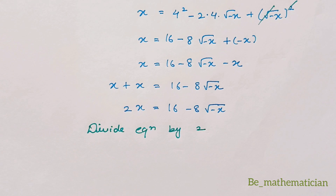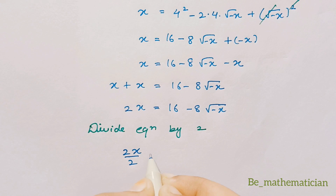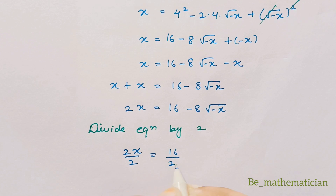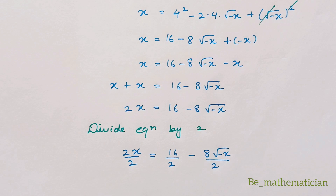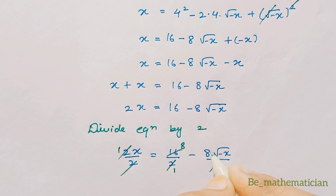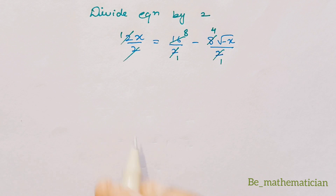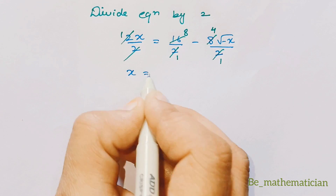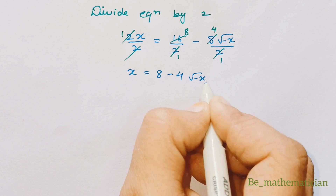Now divide the equation by 2. We get 2x/2 = 16/2 - 8√(-x)/2. Simplifying: x = 8 - 4√(-x).